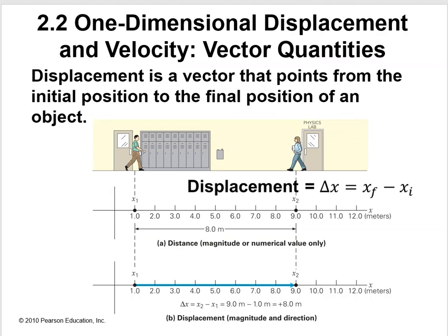Displacement is a vector that points from initial position to the final position of an object. Notice on here that from the 1 meter mark to the 9 meter mark is a difference of 8 meters. So we have a distance of 8 meters. Down here, the only thing they've added is this positive here, which told us that we went to the right, because our scale, the positive side, is getting more positive to the right. So this just became a displacement. This person, if they went from this classroom to the physics lab, they've walked a positive 8 meters.